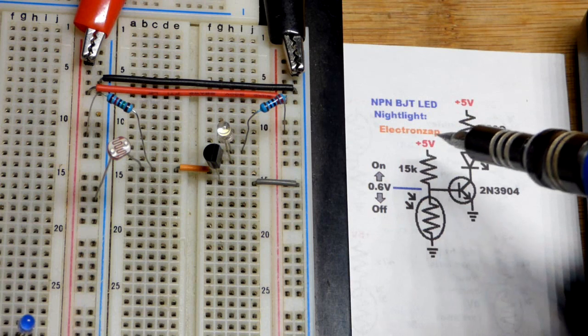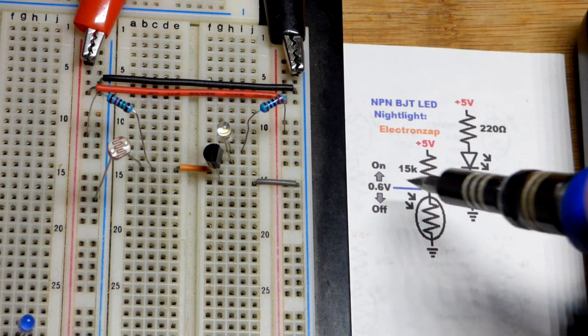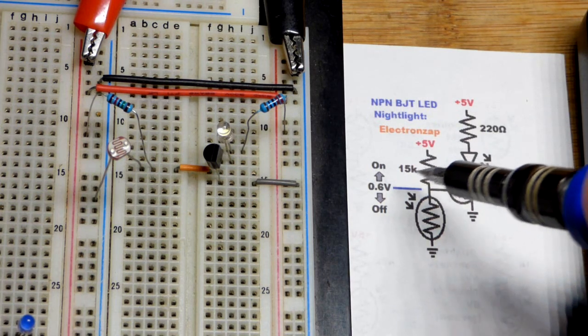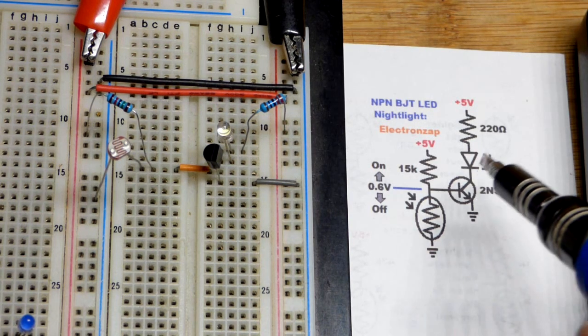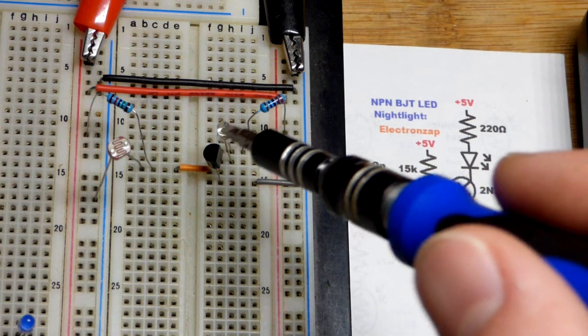So we can put some in series or some in parallel to get slightly different values than that with the kit that I have. You can make those modifications as needed. So we got the LED here, and of course,